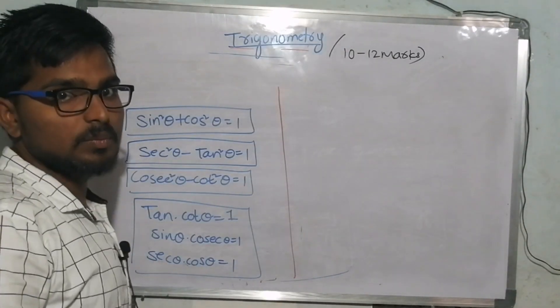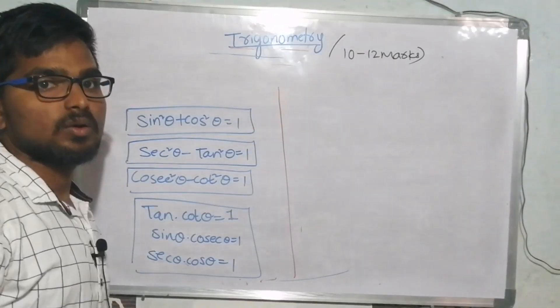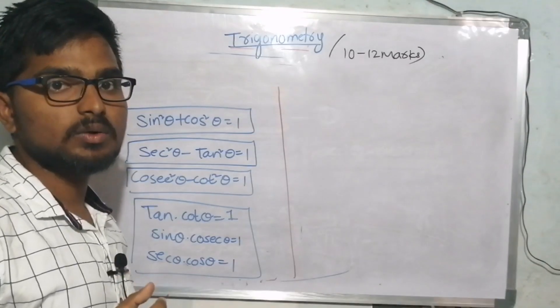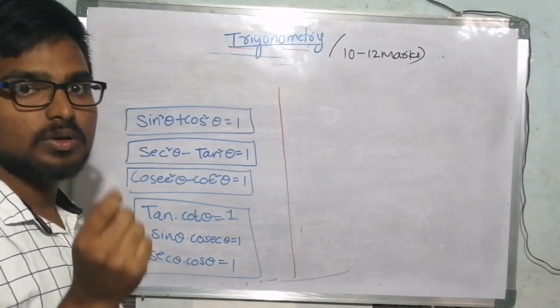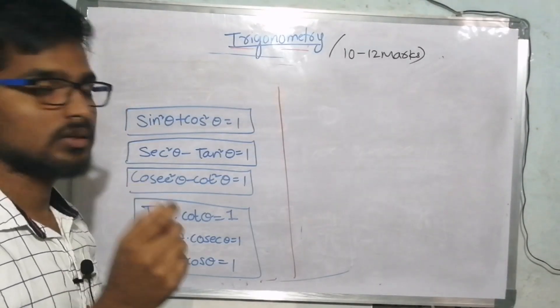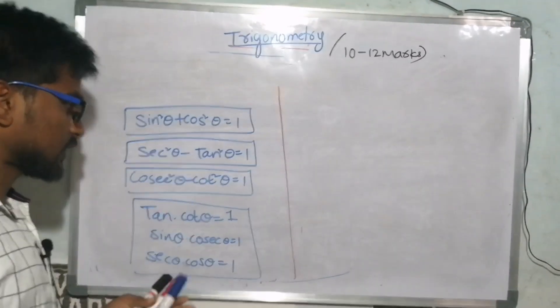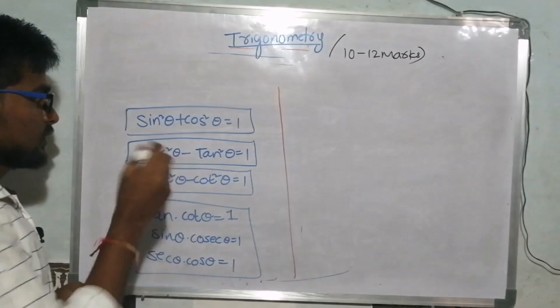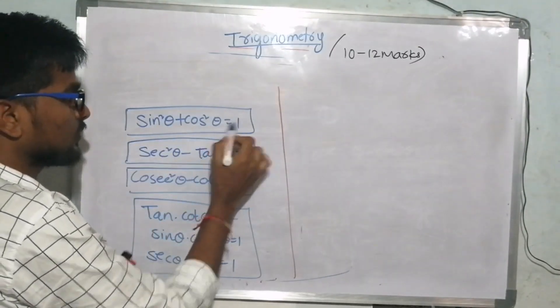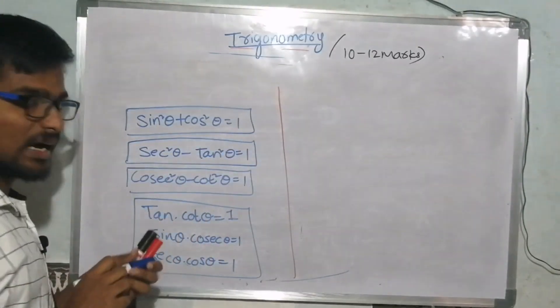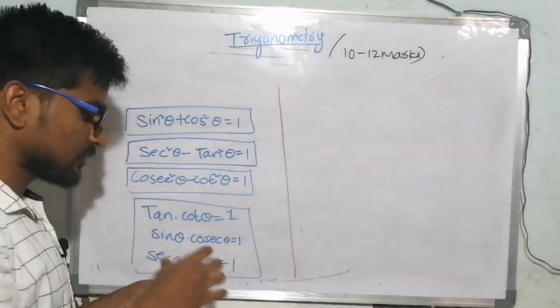Okay guys, now we have to choose some formulas. First we have to choose some important thing. What is it? sin²θ + cos²θ = 1. This is an identity, guys.